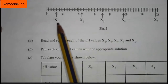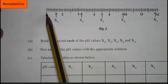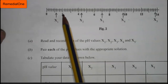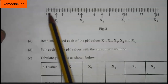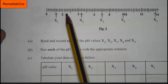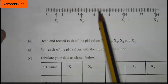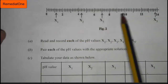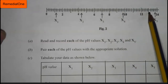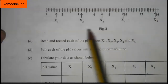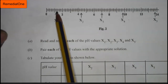Now let's solve the question. Looking at the pH scale, here is 0 and here is 2, so the middle is 1. Reading across the scale: 0, 1, 2, 3, 4, 5, 6, 7, 8, 9, 10, 11, 12, 13, and 14.